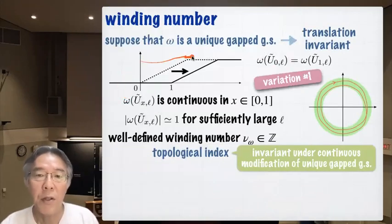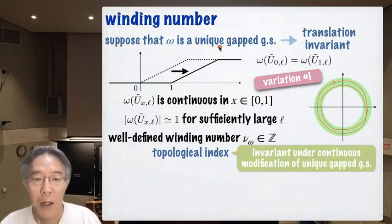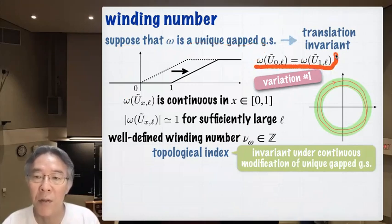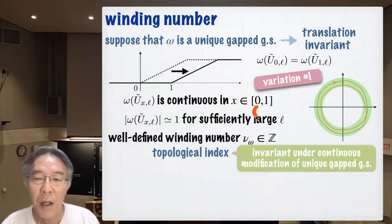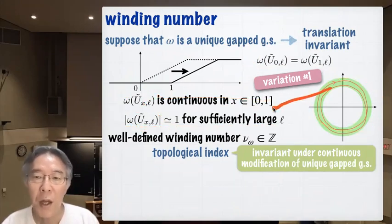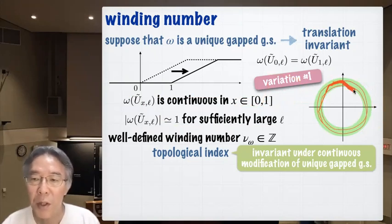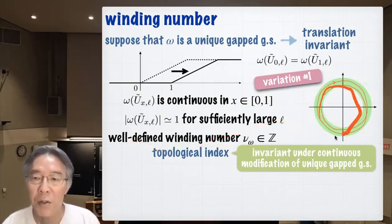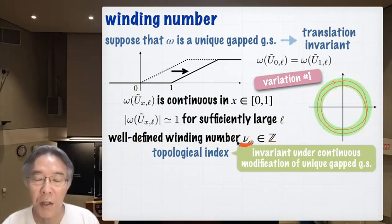Now suppose omega is a unique gap ground state. Since the Hamiltonian is translation invariant, omega is also translation invariant. We have the identity and also know that omega(U-tilde) is continuous in x. I fix l to be sufficiently large so that omega(U-tilde) is very close to 1. As x changes from 0 to 1, this defines a loop within the ring-shaped region, and we have a well-defined winding number associated with this loop — denoted nu(omega). This is a topological index invariant under continuous modification of the unique gap ground state.